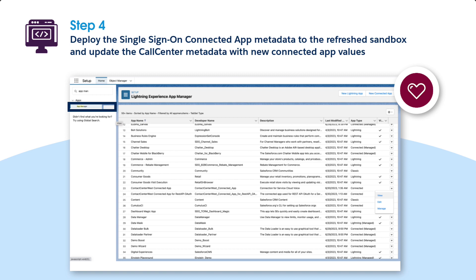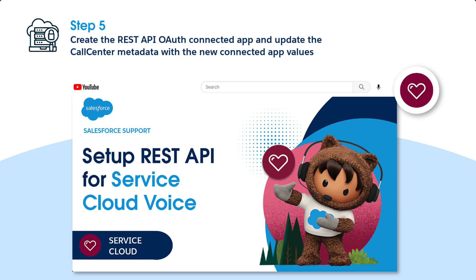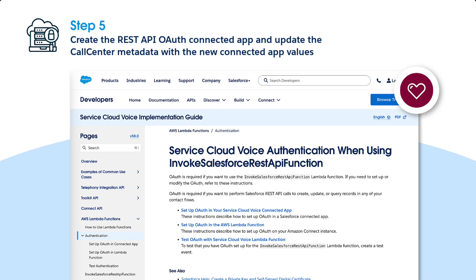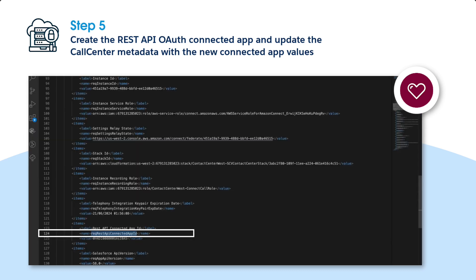Go to Setup, App Manager. Click Manage next to the newly deployed connected app and assign the profiles to the app or enable the Service Cloud Voice permission set. Now it's time to create the REST API OAuth connected app in the refreshed sandbox org. Follow the steps outlined in the Setup OAuth in your Service Cloud Voice Connected app document. Copy the rec-rest API connected app ID value from the connected application .obj file of the newly created connected app. Replace the value of rec-rest API connected app ID in the call center metadata XML file with the copied value.